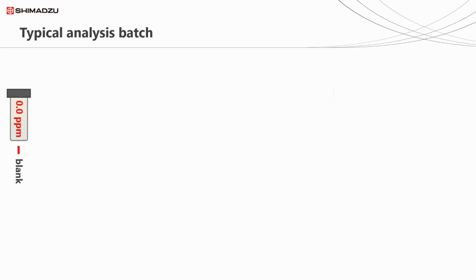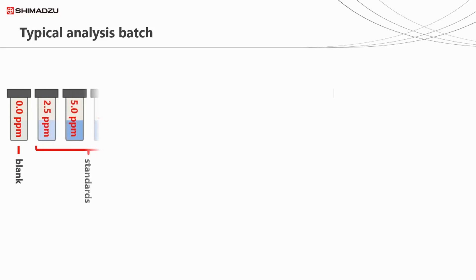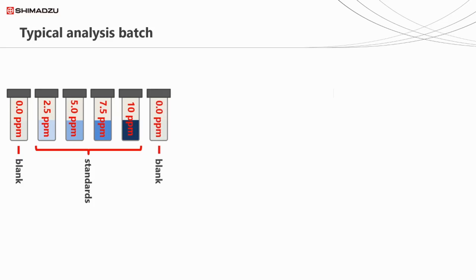So how do all these sample types fit into a typical sequence for the analysis of a batch of samples? To begin with, we typically run a blank or blanks to confirm the system is clean and ready for analysis. This is then followed by our standards, from low concentration to high concentration. If we ran from high to low, we run the risk of carryover, which would skew the results. After the standards, we might run a blank again to make sure there's no carryover from our high-level standard.